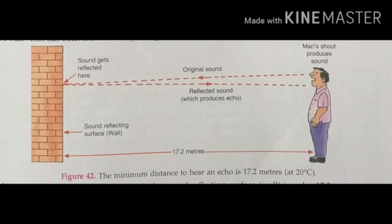That is, the minimum distance from a sound reflecting surface, which can be a wall or a mountain, to hear an echo should be 17.2 meters at 20 degree Celsius, which is normal temperature.